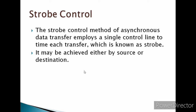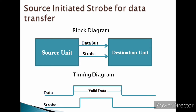Let us see about source-initiated strobe for data transfer. The block diagram and timing diagram of a strobe initiated by the source unit is shown here. The data bus carries the binary information from the source unit to the destination unit. The strobe is a single line that informs the destination unit when a valid data word is available on the bus.